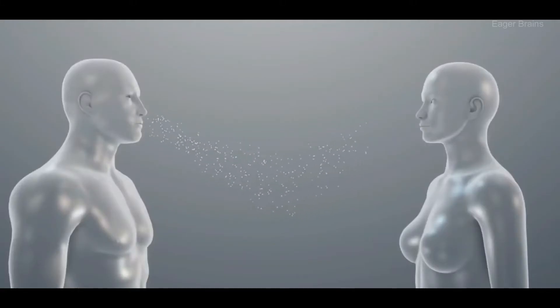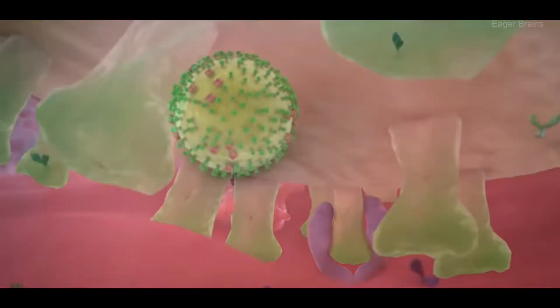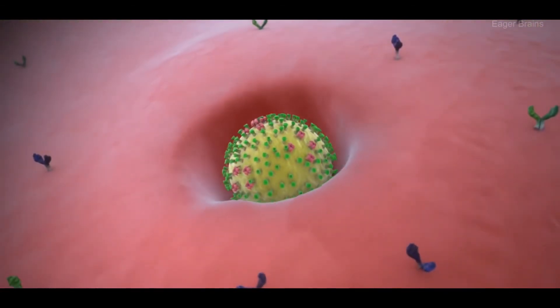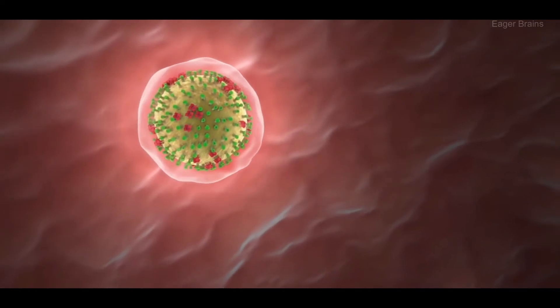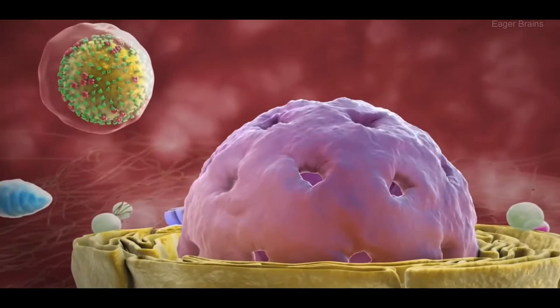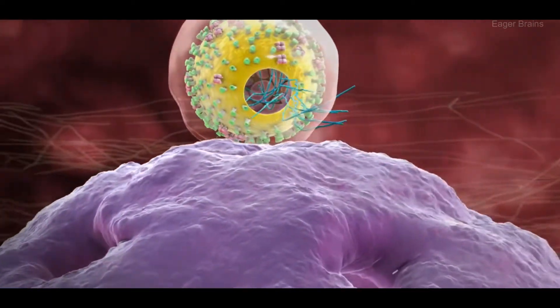A virus needs a medium, air or direct touch, to get inside the human body. Once inside, the virus spike attaches itself to the receptor at the cell surface and gets inside through the cell membrane. The virus then travels towards the nucleus of the cell, which is the command center, and releases its genetic material.